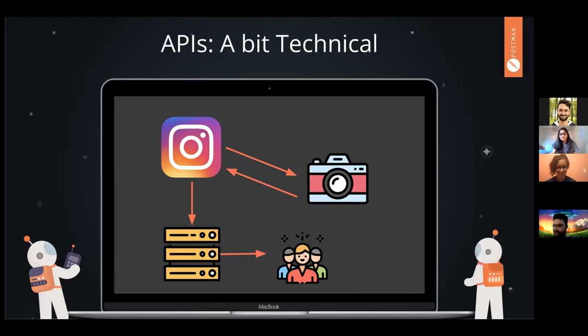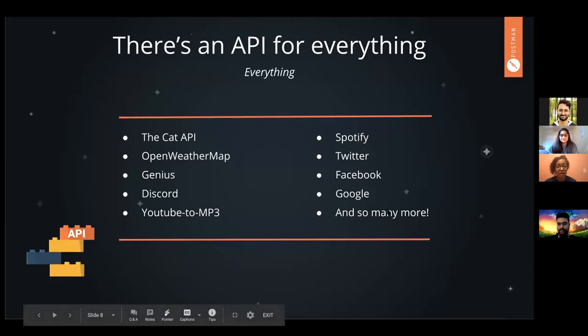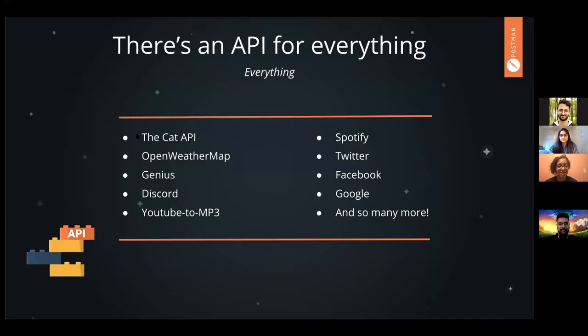There's an API for everything, and when I say that, I really do mean everything. One of my favorites is the Cat API — it shows you different pictures of cats and you can also upload pictures of cats. There are other services you've probably used that have APIs like Spotify, Twitter, Facebook, Discord. It's not just platforms — there are different tools like YouTube to MP3. Really, if there's anything you use and want to add to your applications, you can Google the name and search API, and there's probably an API with its own documentation for you to use.